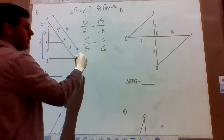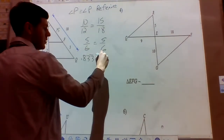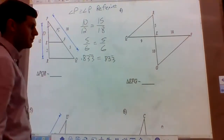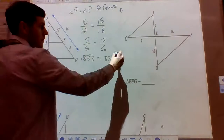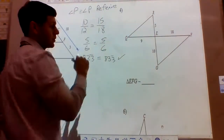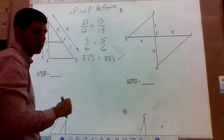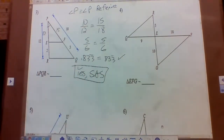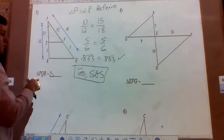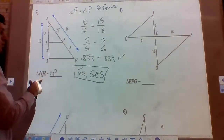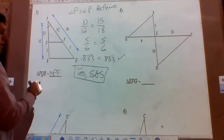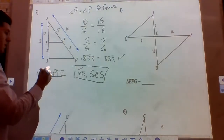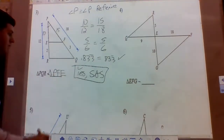So we have one pair of congruent angles and two sides that are proportional — their ratios are equal — so this is yes by side-angle-side. The two ratios are equal, the two sides are proportional, and the angle is between them. The similarity statement is triangle PQR similar to triangle PFE — P corresponds with P, Q with F, and R with E.